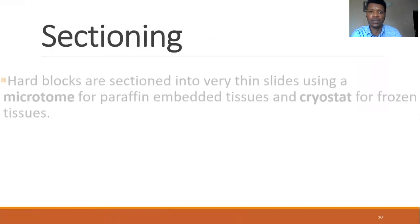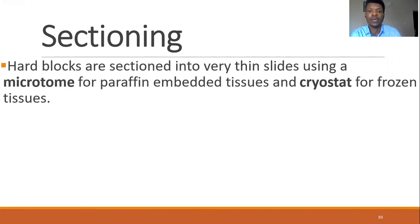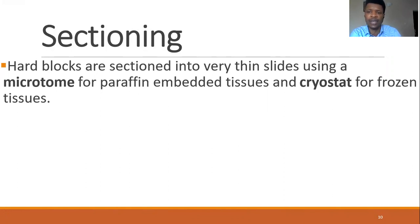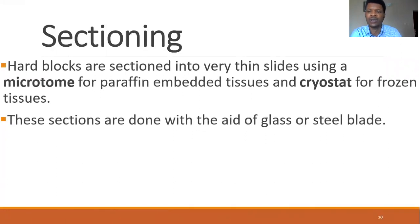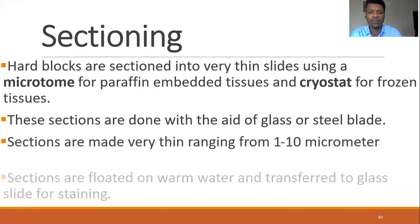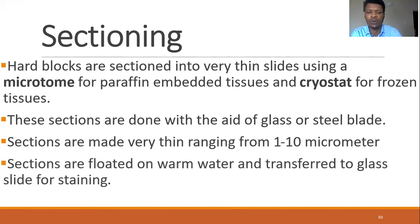Once we are done with that, we go to sectioning — we now have a rock-hard tissue, whether from the paraffin or from the frozen tissue. If it is paraffin-embedded tissue, we use a normal microtome. But if it is a frozen tissue, we use a cryostat for sectioning. These sections are done in very thin sections with the aid of a glass or steel blade — glass blades for the cryostat, steel blades for microtomes. Sections are made between one to ten microns. The sections come out like ribbons of paraffin, where you find the tissues lining, and they're placed on warm water. The warm water melts the paraffin, so we have as little paraffin as possible on the tissue, and it is then placed on the glass slide.